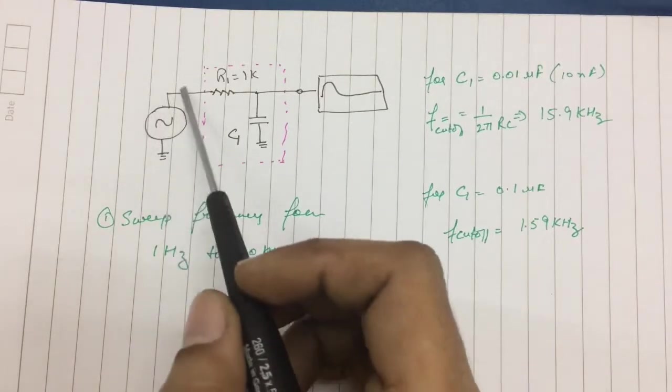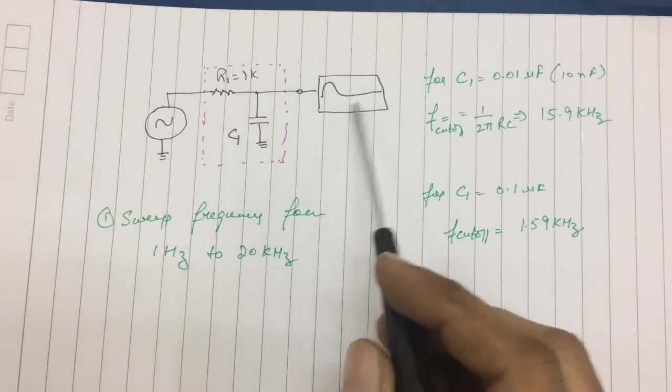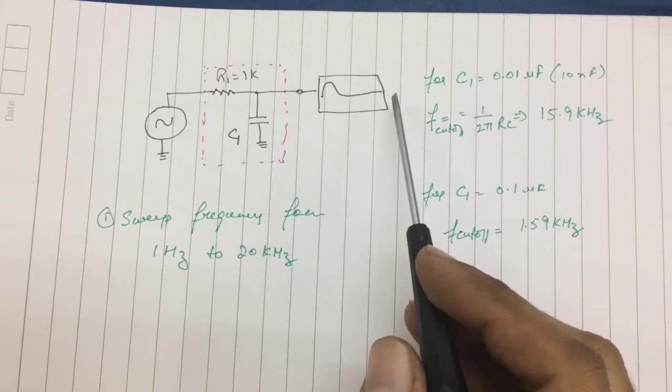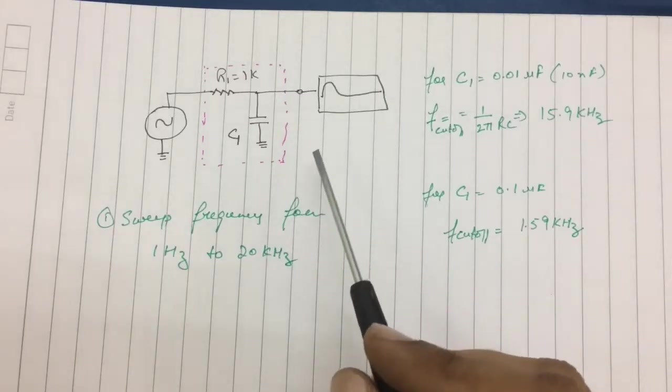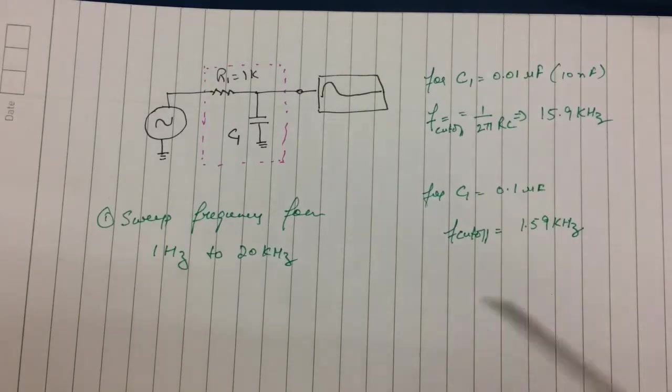I'm going to try and use the function generator to put in variable frequencies and then use the capabilities of the Rohde & Schwarz to plot the data and see if we can get an estimate of the cutoff frequency and the response of our little simple network.